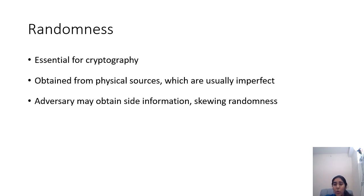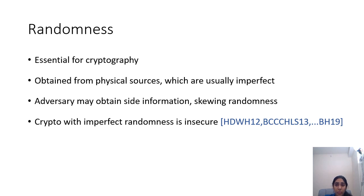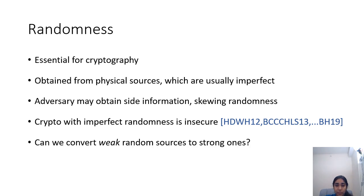We have a whole lot of evidence, including most recently work by Breitner and Henninger, who computed several Bitcoin private keys, that shows that imperfect sources of randomness can lead to explicit attacks on cryptosystems. So a very natural, meaningful question is: can we convert weak sources of randomness into strong ones?